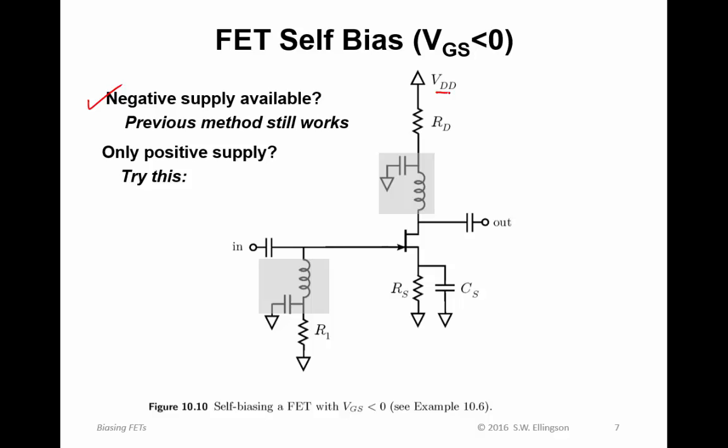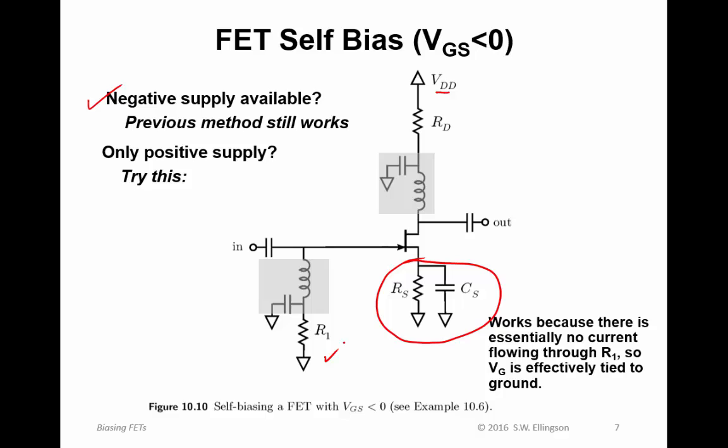Here's a scheme for creating a negative value of V_GS using only a positive supply. We are using a resistor on the source terminal and we are hanging this network off of the gate. This works because there is essentially no current flowing through R1. There should be no DC getting through this cap and there's only negligible current flowing into the gate. Therefore the drop across this resistor should be approximately zero. So if it's approximately zero, then this point should be at zero voltage DC. So the gate is essentially tied to ground. Whereas there will be current flowing through the source resistor, creating a positive drop here. So there will be a positive voltage at this terminal and a zero voltage at this terminal, and that will make V_GS negative.